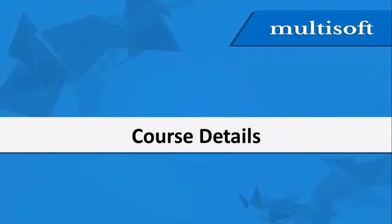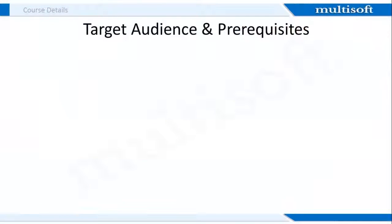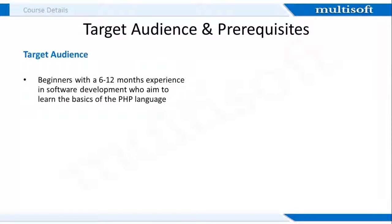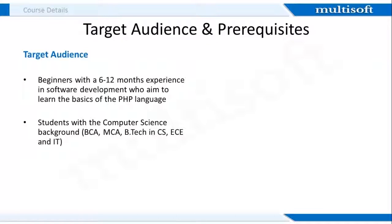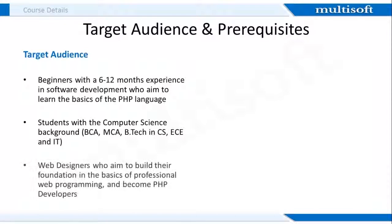Course Details is the next section I'm going to discuss. This will cover the target audience, prerequisites, scope for PHP developers, and the course outline. The target audience includes beginners with less than 6 to 12 months of experience in software development who aim to learn PHP basics, students with a computer science background, and web designers who aim to build their foundation in professional web programming and become PHP developers.